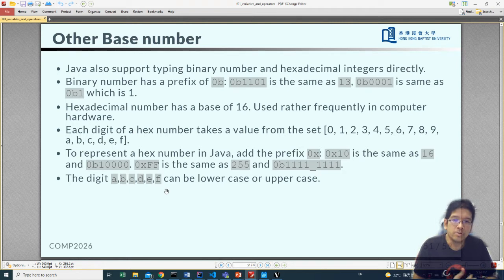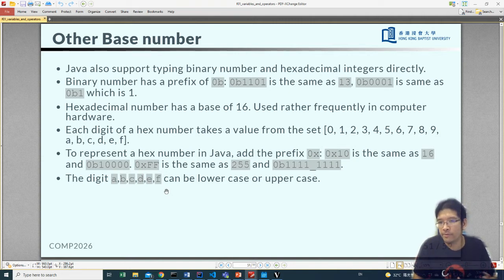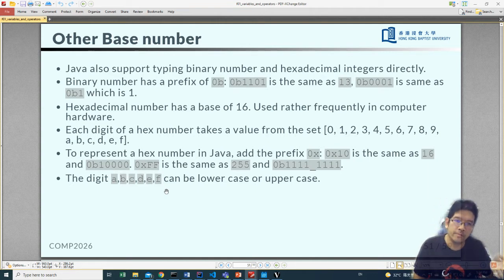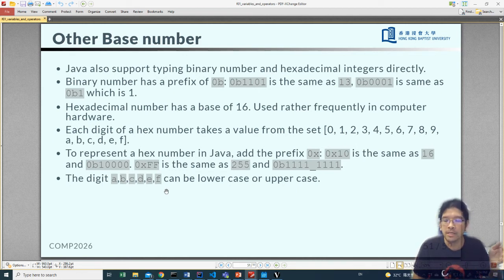Other base numbers are also supported in Java. Java supports binary, decimal and hexadecimal. If you want to represent the binary number you can start the literal by 0B. So beginning with 0B, that means this is a binary literal. 0B1101 will mean 13. You can also insert leading zeros in front of your value. So for example 0B0001 is the same as 0B1, which is 1 in decimal.